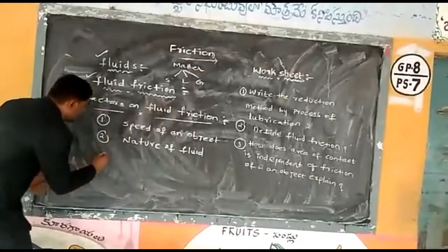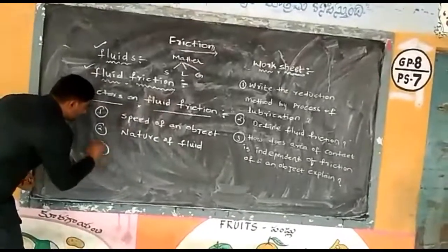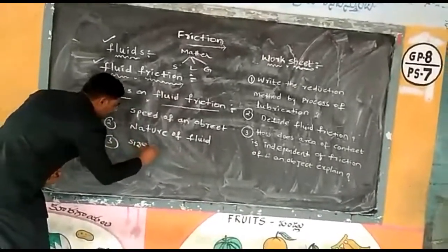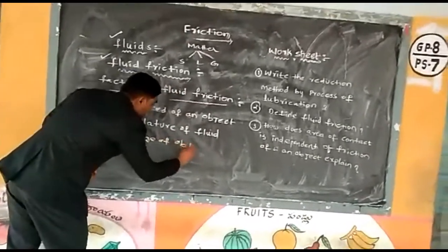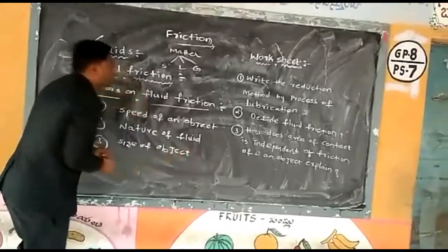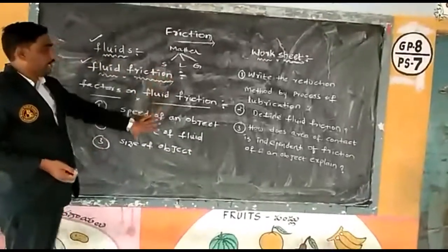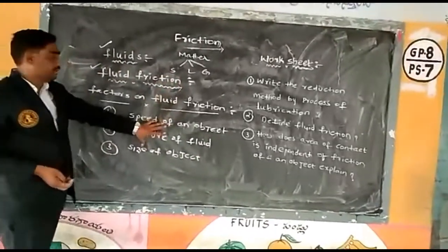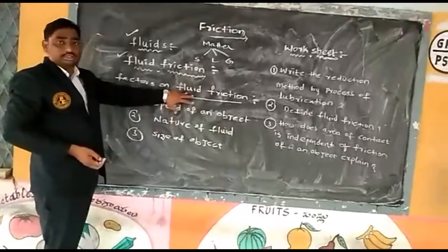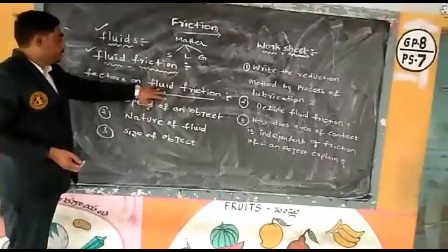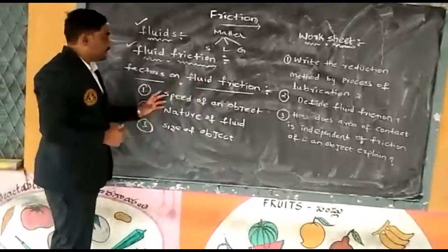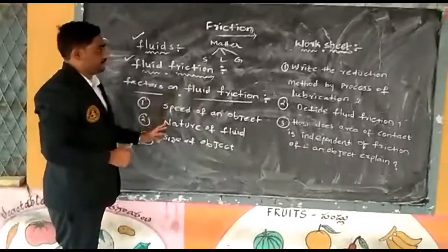And as well as the size of the object moving through the fluid — this is a very important one. The size of the object moving through the fluid also plays an important role in changing the rate of fluid friction. These three are the factors that affect fluid friction.